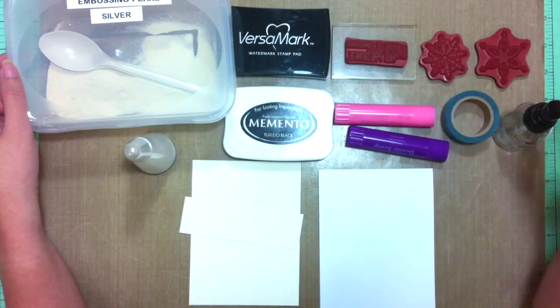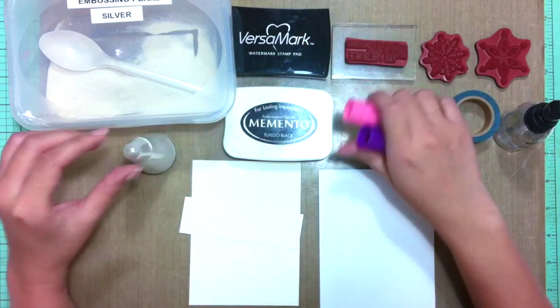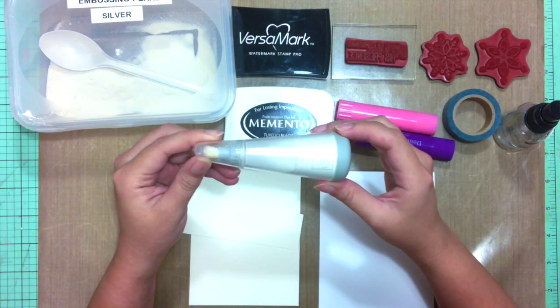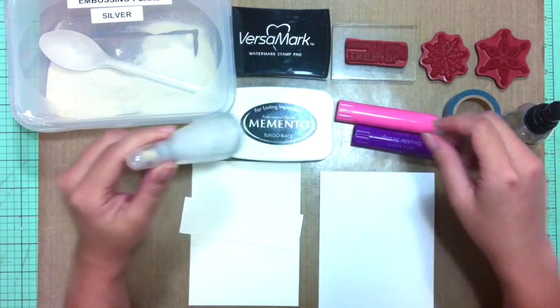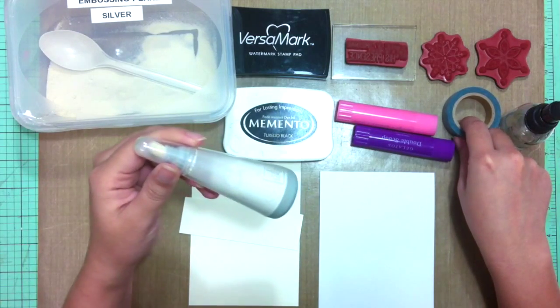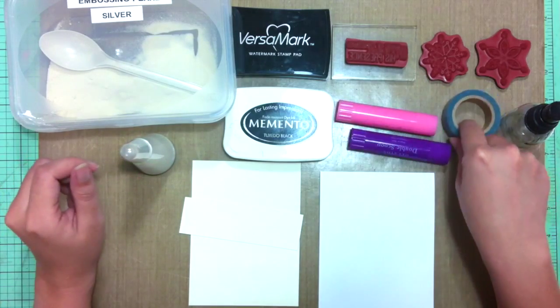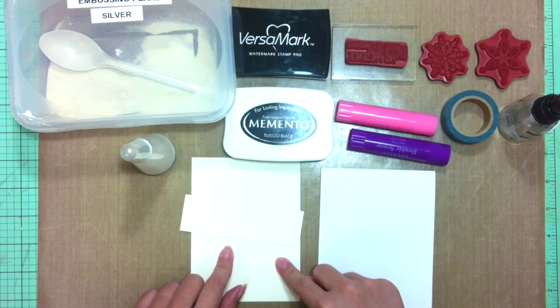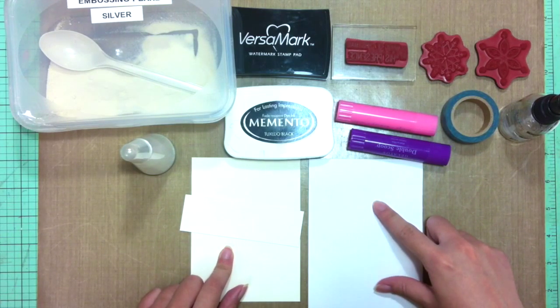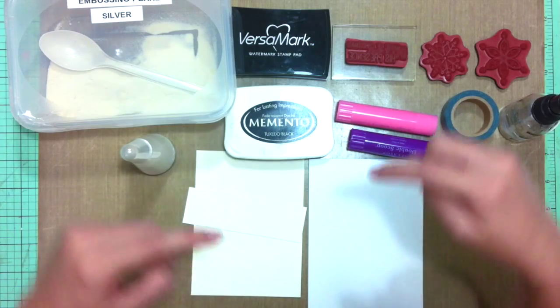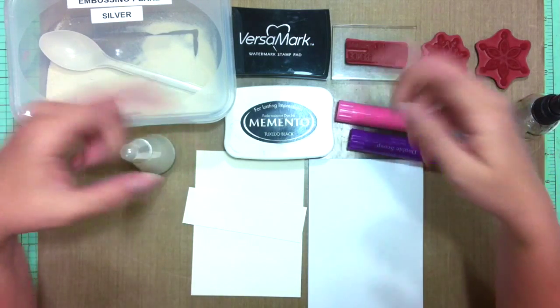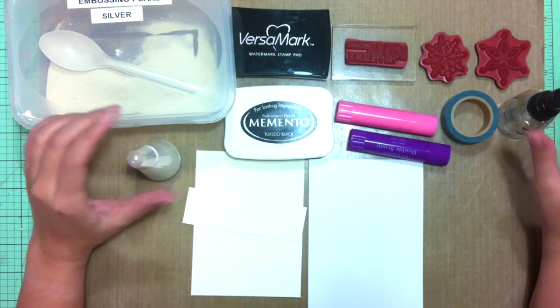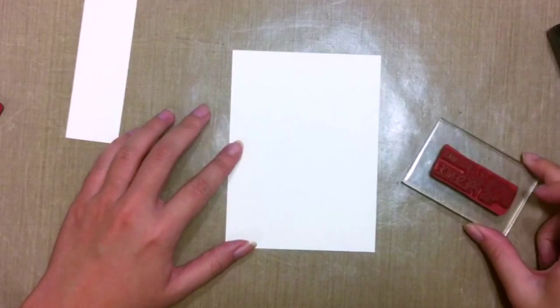This is the embossing powder to prep your surface. You could use baby powder if you want, washi tape and water, and some watercolor cardstock and some white cardstock. The list of supplies will be listed below, so don't worry if you can't catch any of that, and let's begin.